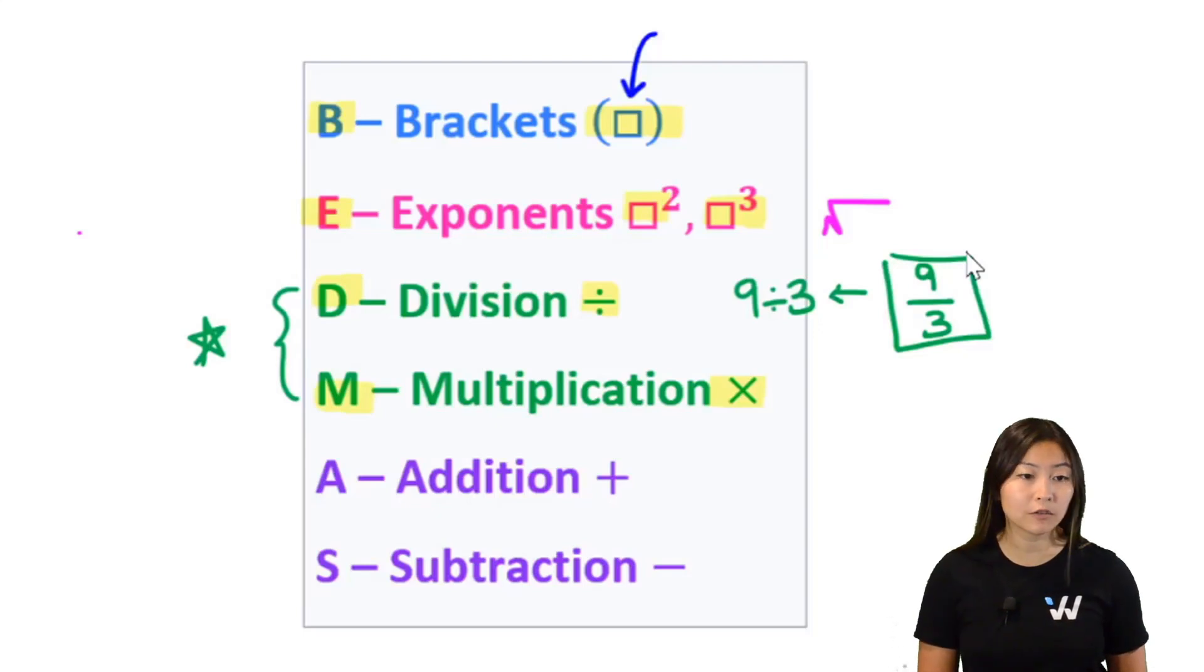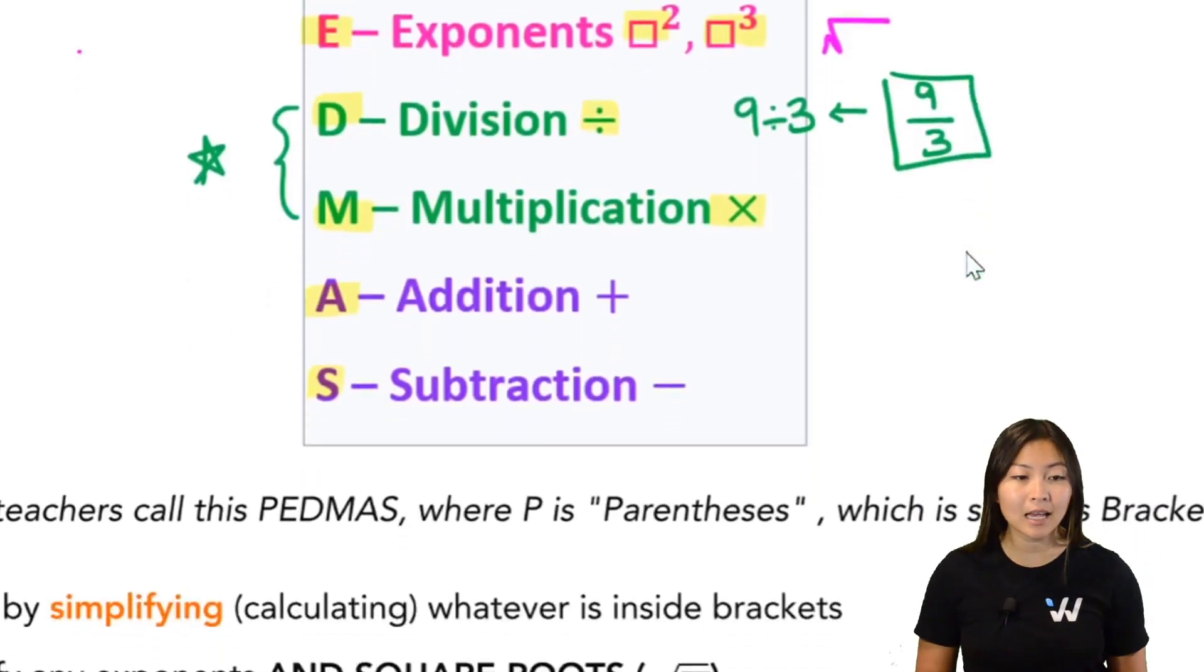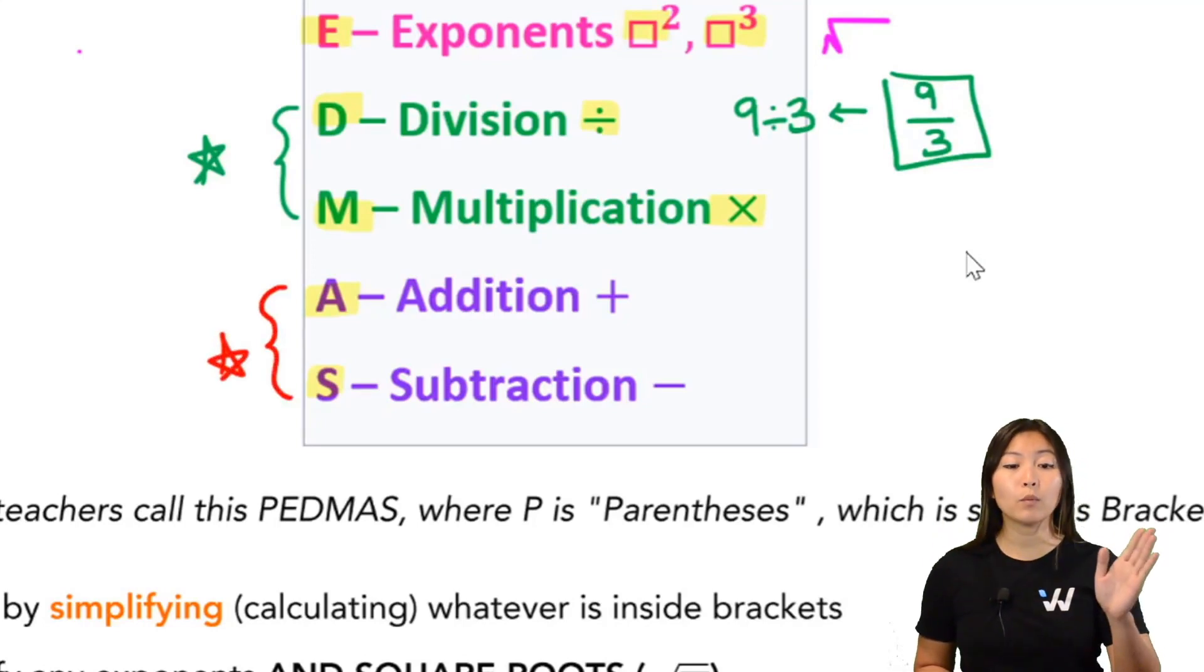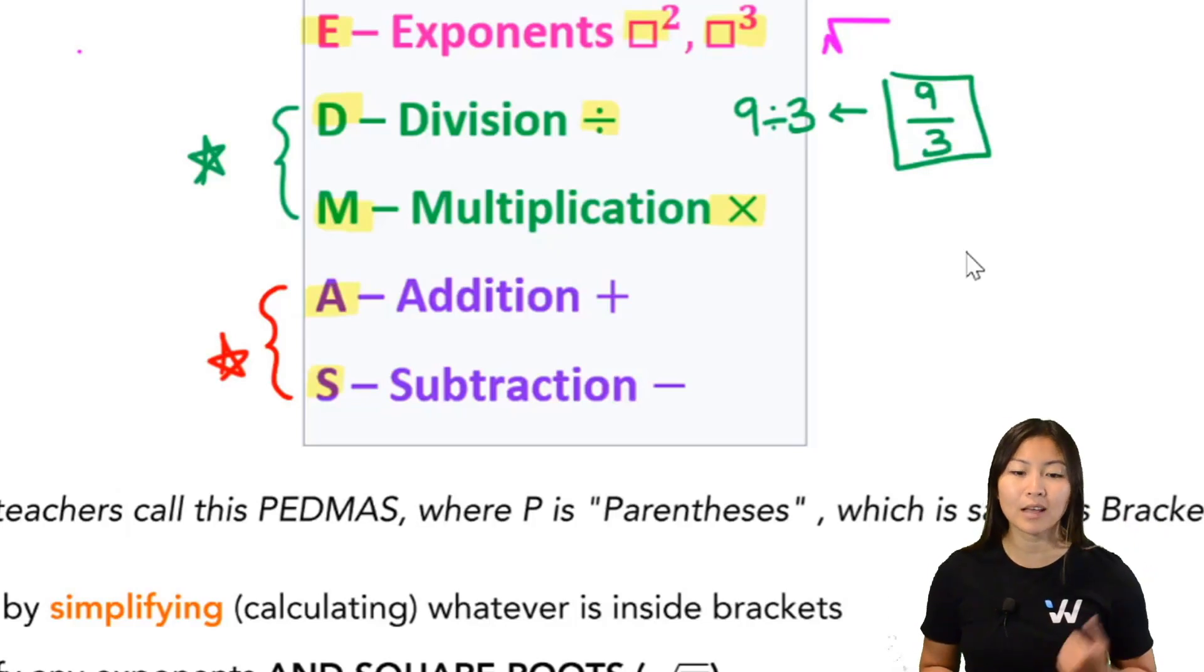Alright, once you're done dealing with multiplication and division, next we are going to deal with addition, that's what A stands for, and subtraction, that's what S stands for. And again, these two are on the same kind of level here. So we're going to go from left to right, and whichever one we see first, whether it's addition or subtraction, we're going to handle that and deal with that.